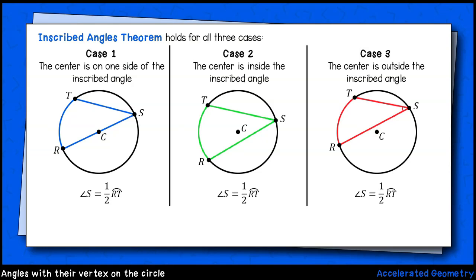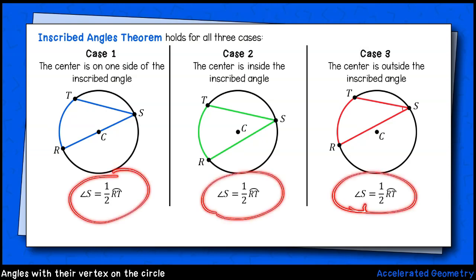As we saw previously, the inscribed angles theorem holds that the measure of an inscribed angle will be exactly half the measure of its intercepted arc. We looked at three possible scenarios. On the left, the case where one of the angle's rays passes through the center of the circle. In the middle, the case where the center of the circle lies between the angle's rays. And finally, on the right, the case where the center of the circle lies outside of the angle's rays. No matter how the situation plays out, the theorem remains the same. The intercepted arc is twice the inscribed angle measure, or put another way, the angle is half the intercepted arc.